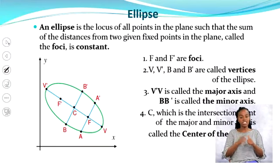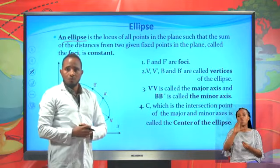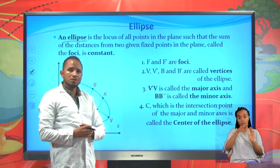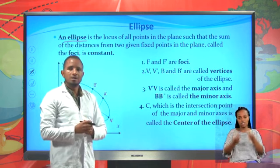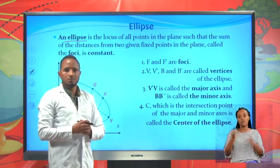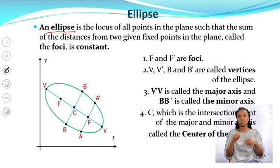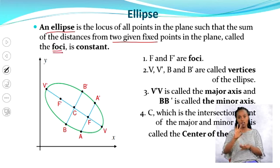First, let's see what an ellipse is. An ellipse is the locus of all points in a plane such that the sum of the distances from two given fixed points in a plane is constant. These two fixed points, we call them foci.